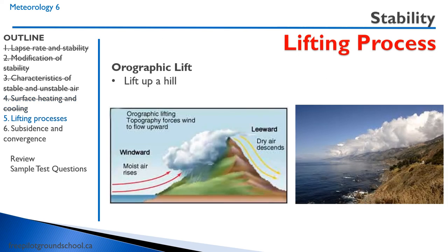Let's talk about some lifting processes. When clouds form, especially in stable air, we need some sort of lifting process to get things started. The first one is orographic lift, where moist air rises up a slope. As you can see in the image, clouds form right at the ridge from the moist air over the ocean being blown up the ridge — as it rises, it expands and cools, and the water vapor condenses into water droplets forming clouds.